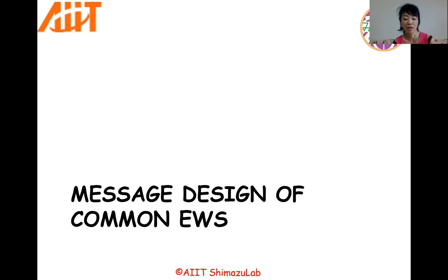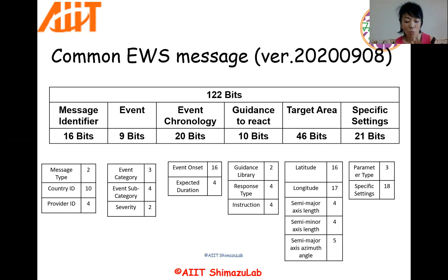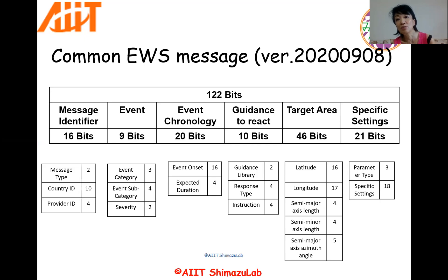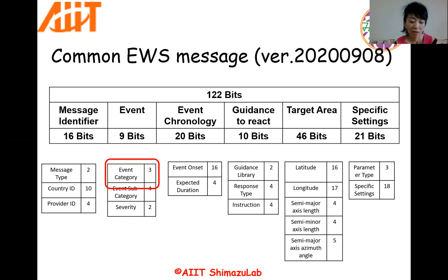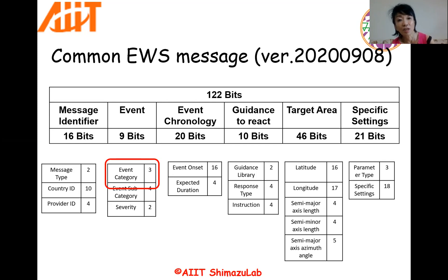I want to move to an actual Common EWS message format specification. 122 bits for Common EWS message area consists of six parts: message identifier, event, event chronology, guidance to react, target area, and specific settings. The part of event also consists of three parts for representing the information structure of disaster type. Event category has disaster classes, event subcategory has actual disaster name, and severity has that severity level.